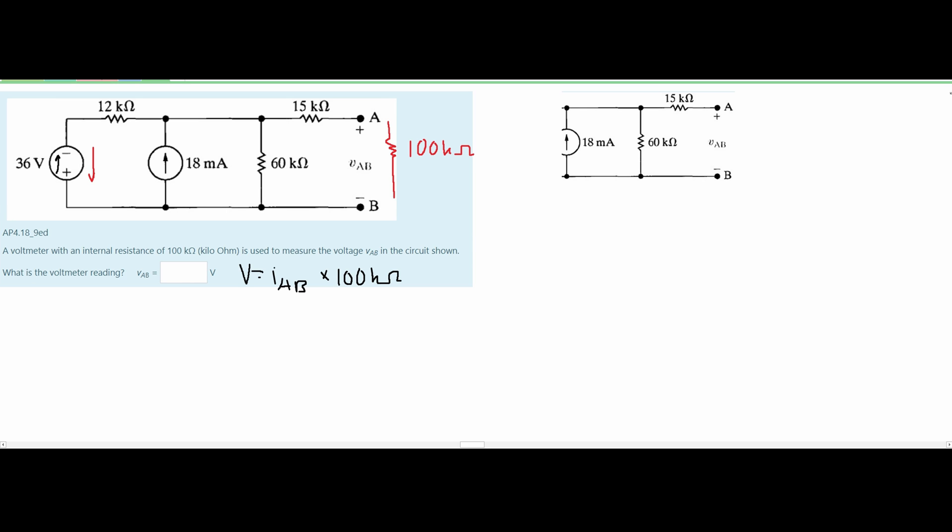If we redraw the circuit like this, nothing on the right side has changed but we will now have a 12 kilo ohm resistor here and we are also going to have a current over here that's going down like this.